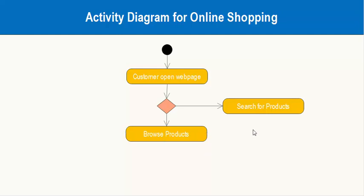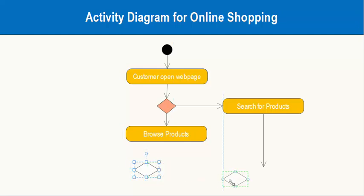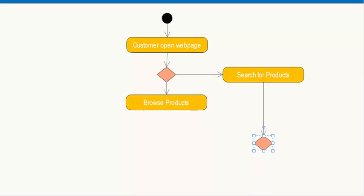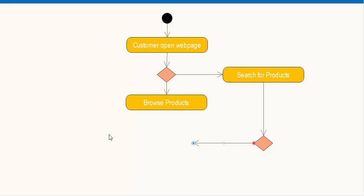When the customer searches for products, we have another condition. If the product is found, we follow the found path — the item has been found.